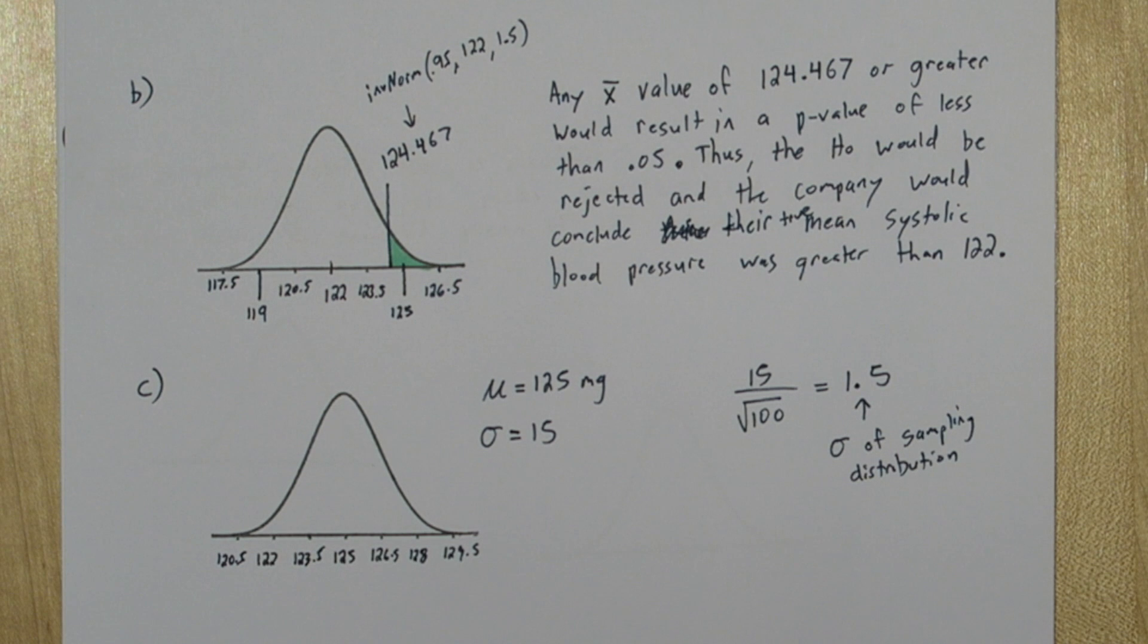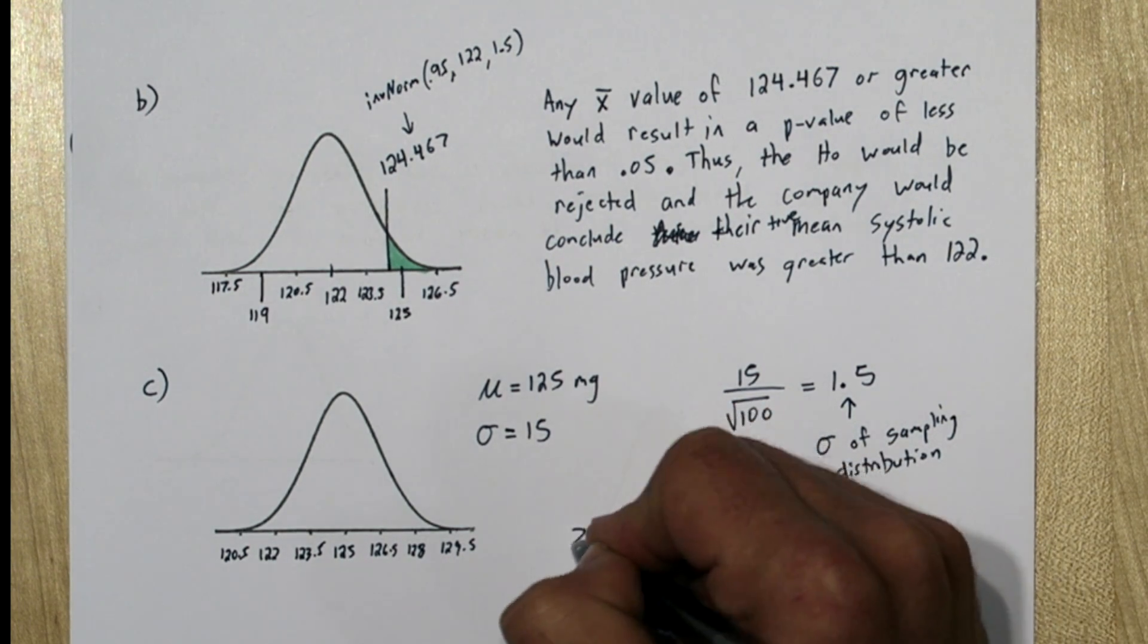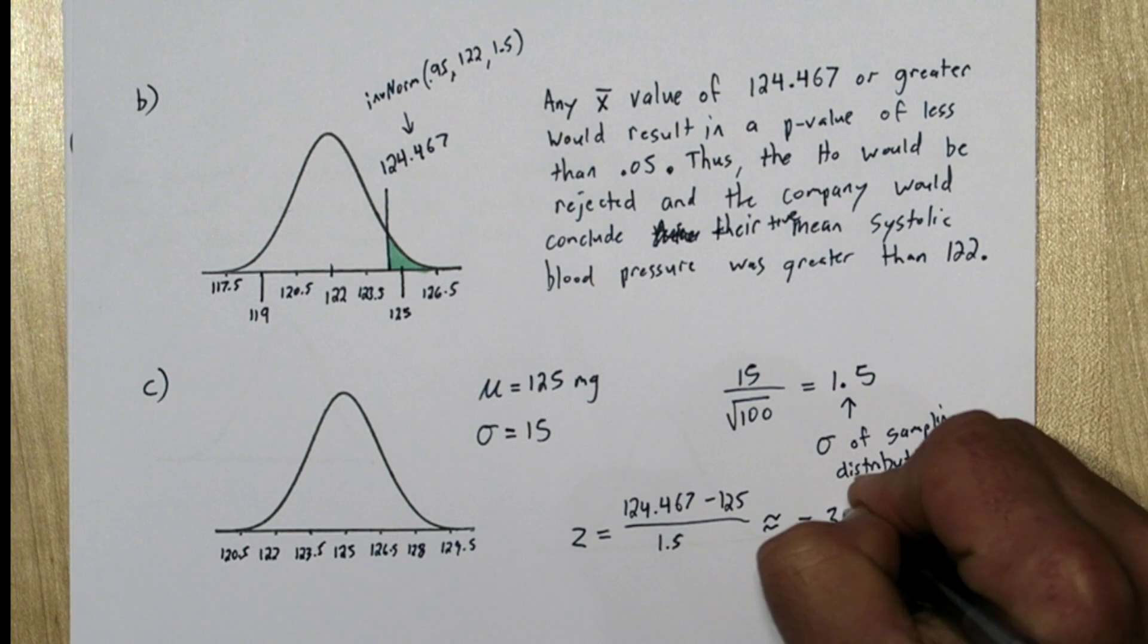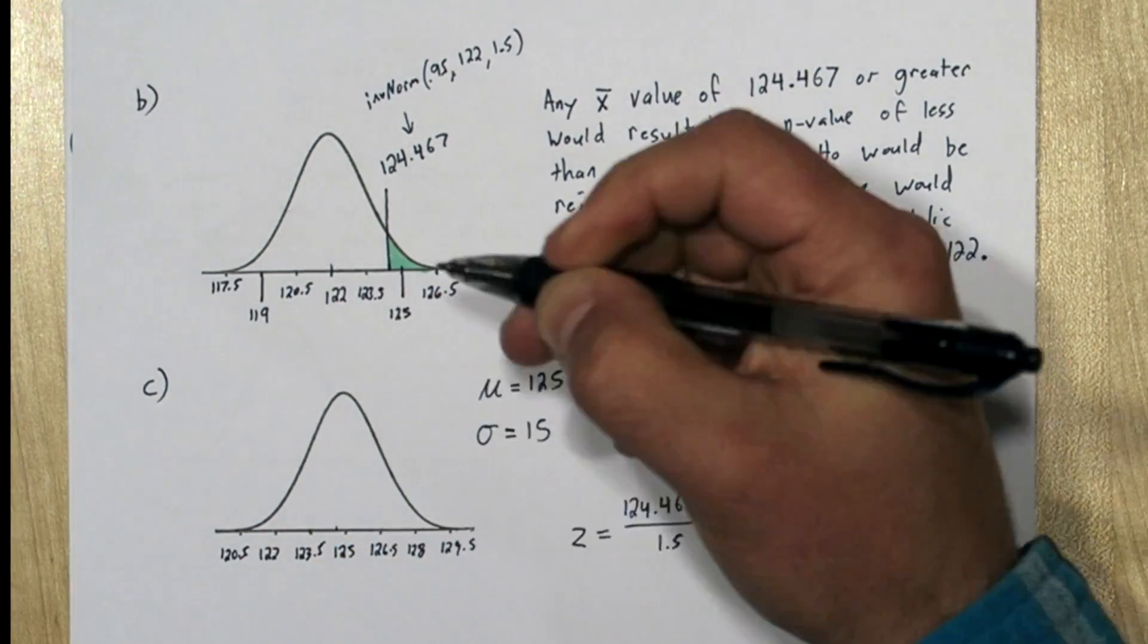So let's use that true mean and that sampling standard deviation to label our axis of our normal curve. In part C, we have the sampling distribution for samples of size 100 from this company, and we can use that to figure out the probability that their x-bar, their sample mean, will exceed that value we found in part B, the 124.467. So let's start by labeling that value on this curve. One thing that might help is a quick little z-score calculation.